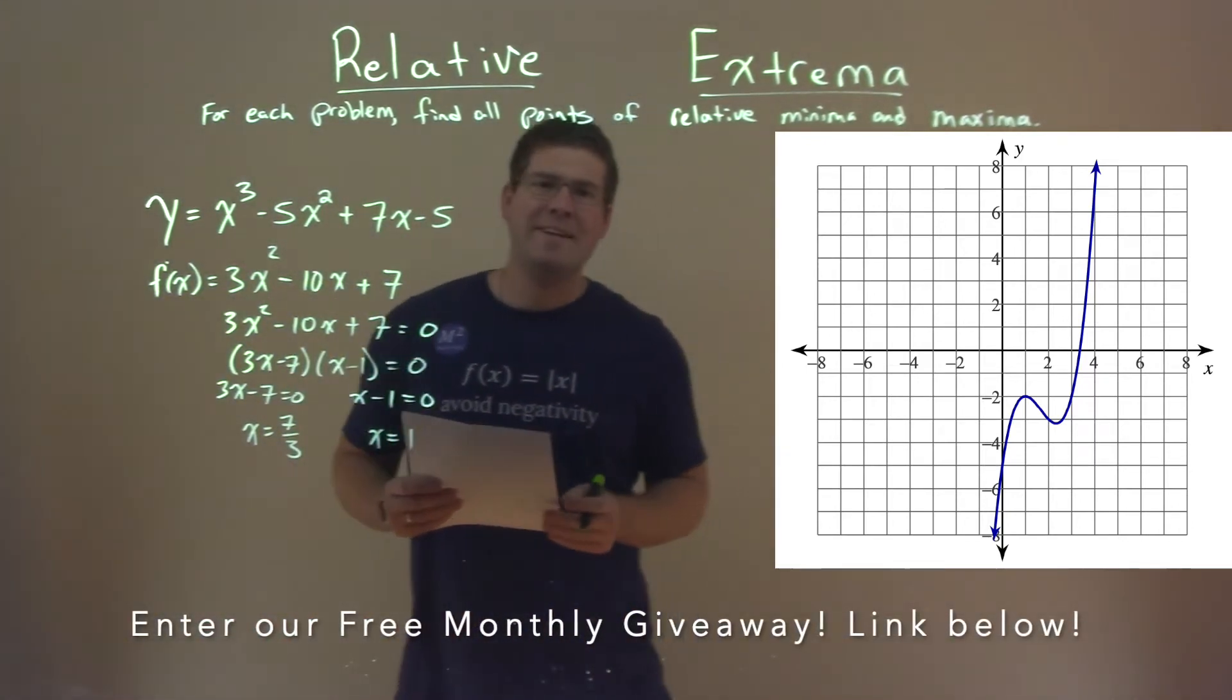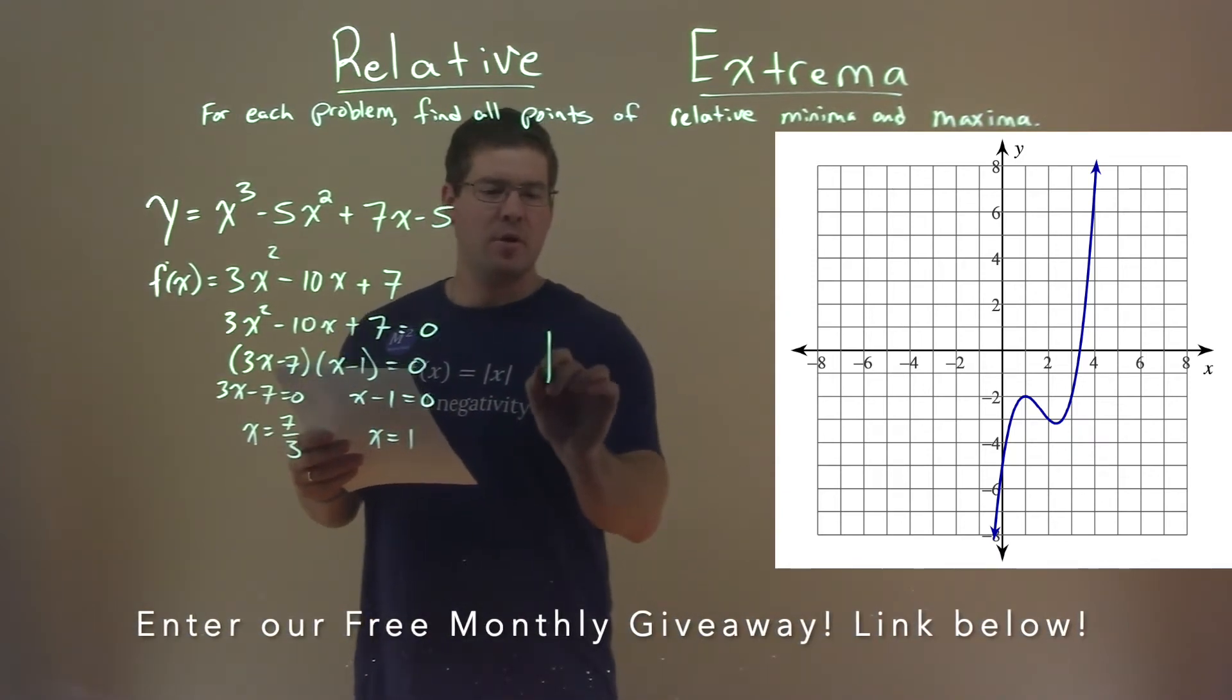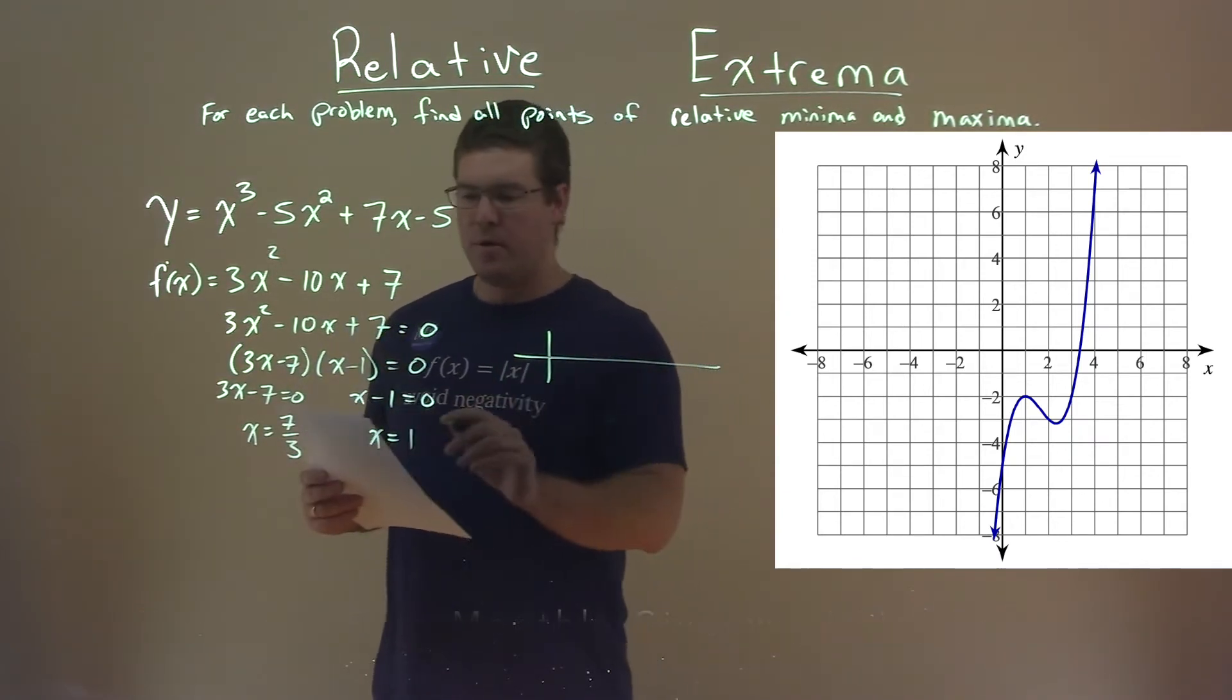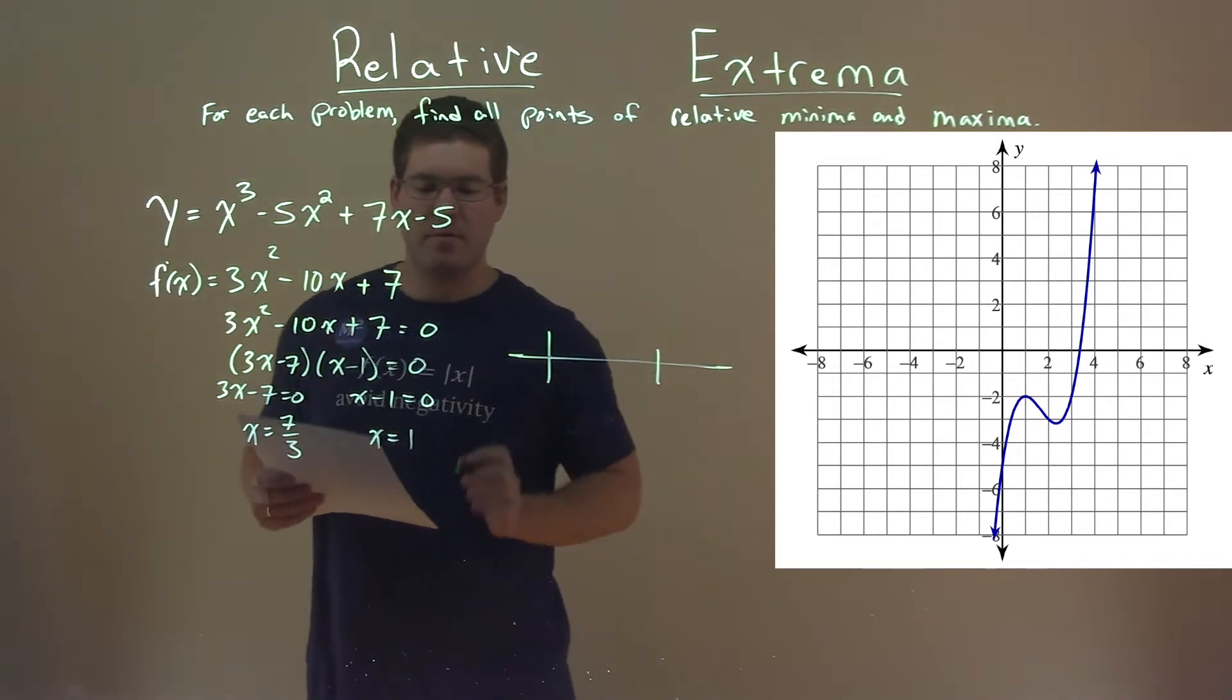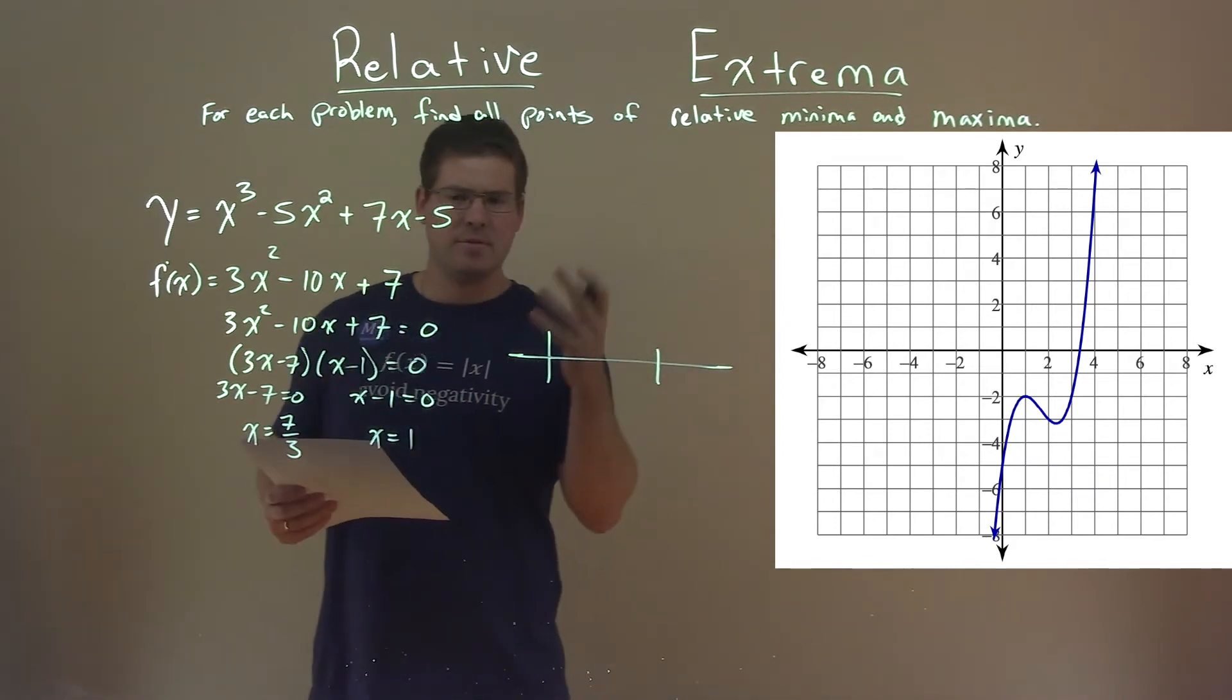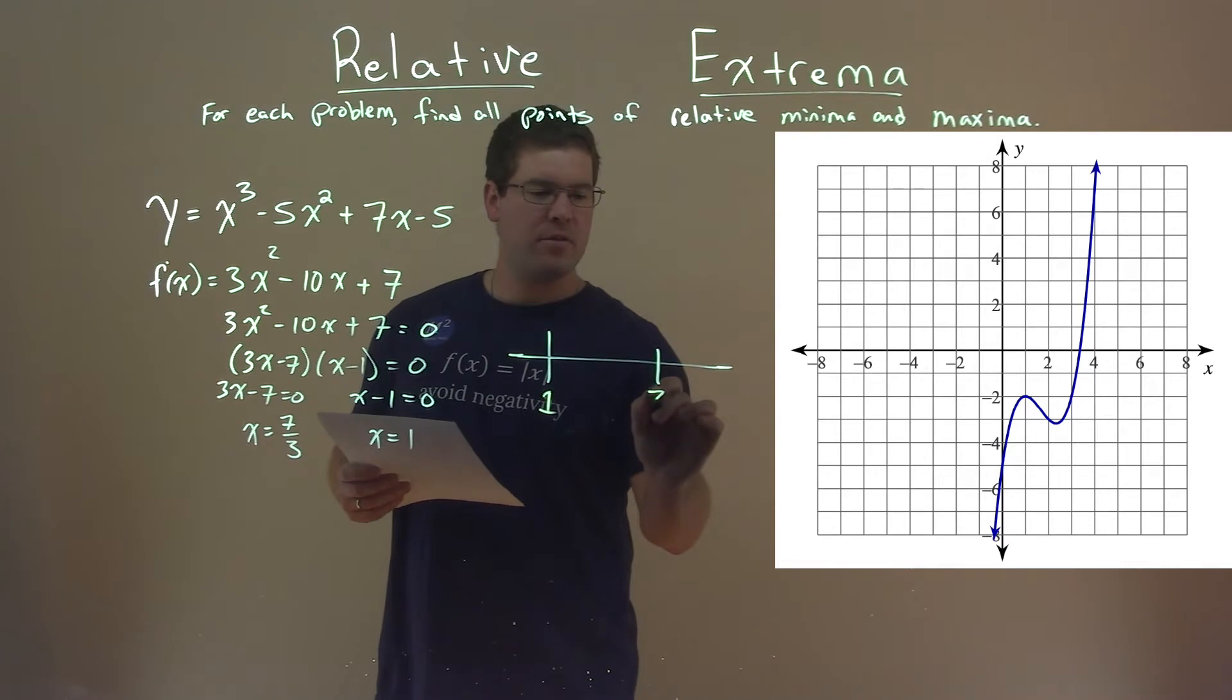So from here, we need to use our chart. We have a little chart going on right here. We put our two values right there, and this is our first derivative test. We're going to see what happens here. Put 1 here, the lower value, and then 7 thirds.